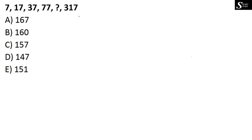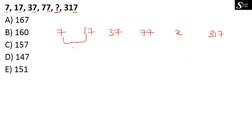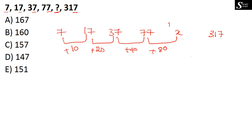Next question: 7, 17, 37, 77, ?, 317. All unit digits are 7, suggesting the missing term also ends in 7. Taking differences: 17 − 7 = 10, 37 − 17 = 20, 77 − 37 = 40. The differences are doubling each time: 10, 20, 40, so next is 80. Adding 80 to 77 gives 157.